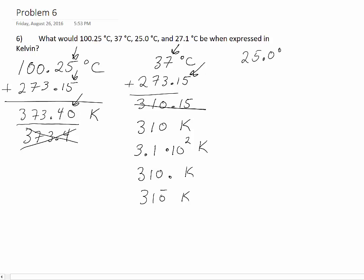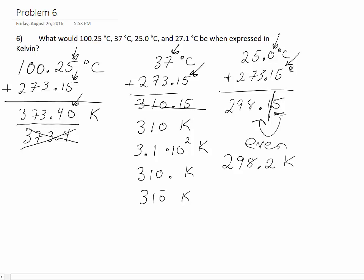25.0 degrees Celsius plus 273.15 gets us to 298.15. The 25.0 is precise to the tenths, our conversion is still precise to the hundredths, but we can only keep to the tenths place because of the 25.0. This is exactly 5 here, so which way does this number round? It rounds to the even number. Is one even? No, it's odd, so this becomes 298.2 Kelvin.